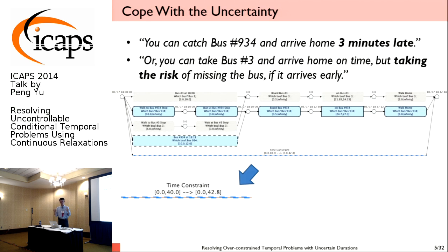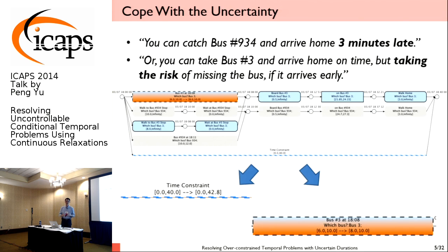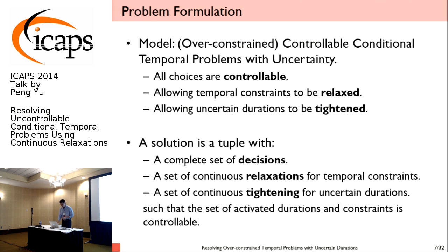We can either get a suggestion to take bus 934 — you can definitely make it, but you will be three minutes late — or, if you want to take the chance, you can switch to bus number three and arrive home on time, but you're tightening the uncertain duration from 6–10 to 8–10, meaning a 50% chance of missing the bus. My presentation has four parts: problem definition, relation to our prior INCA work, what's new here extending the consistency-based relaxation framework to handle controllability problems.